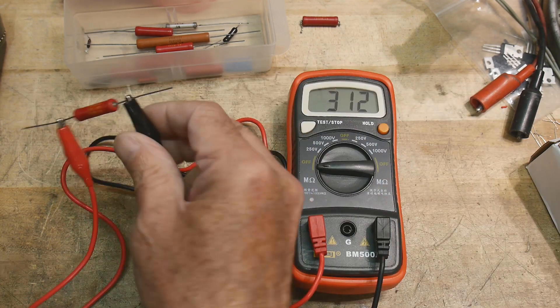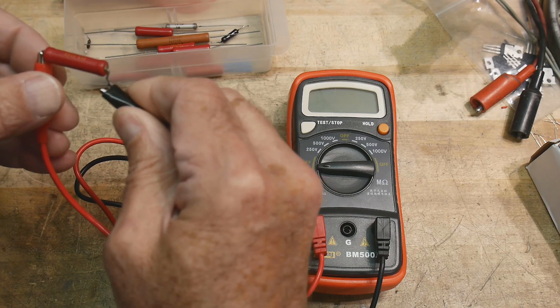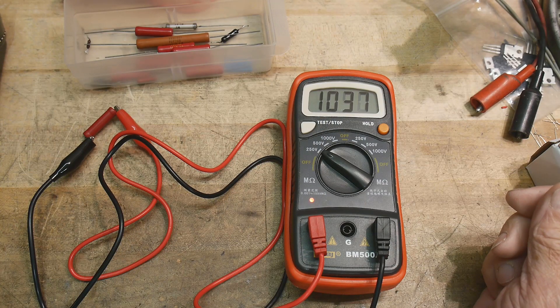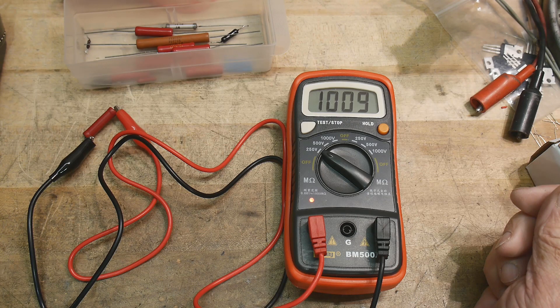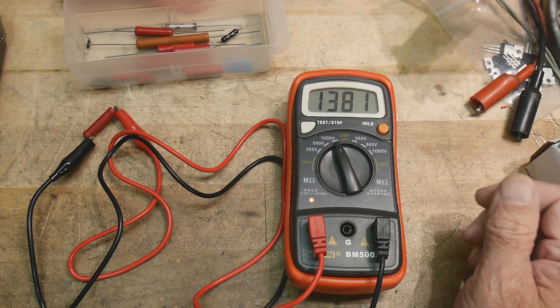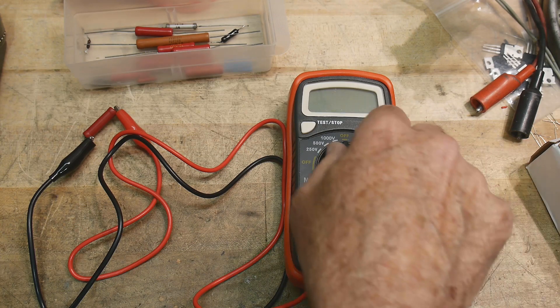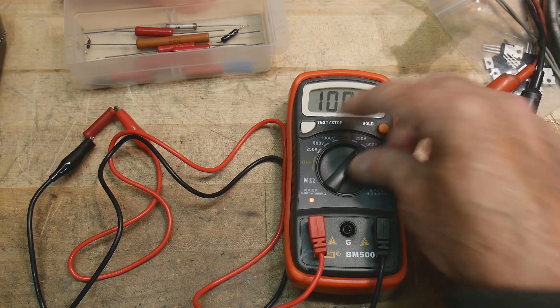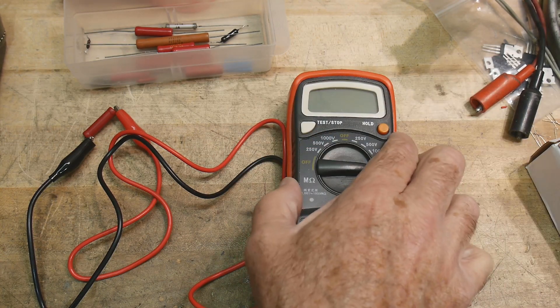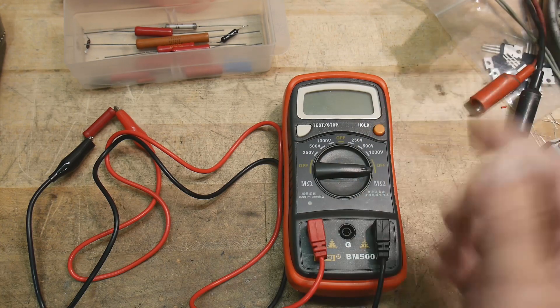And then the best for last, this one here is a one gig ohm, it's actually marked 1000 meg ohm. Let's see if we can measure that one. There we go 1000 meg ohms, 500 volts, 1000 volts doesn't matter. Now I don't know why there's two ranges, there's an off in the middle and then another 250. They seem to do the same thing so I don't know why, other than they just needed to repurpose this particular box.